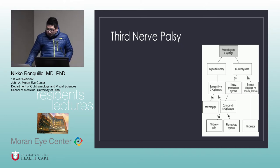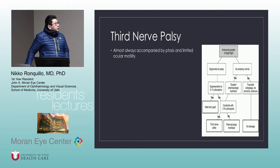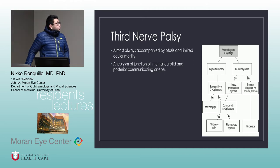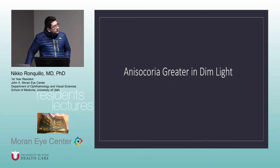Third nerve palsy is almost always accompanied by ptosis and limited ocular motility. We have to think about an aneurysm at the junction of the internal carotid and posterior communicating arteries.